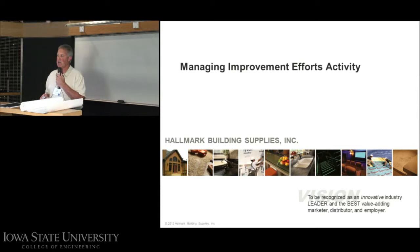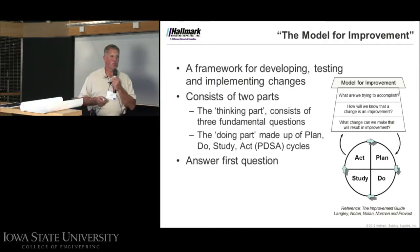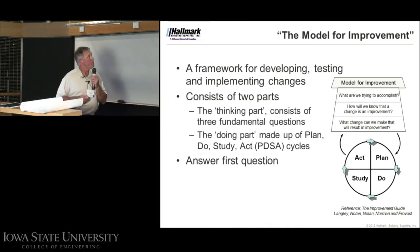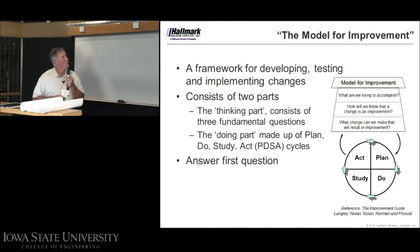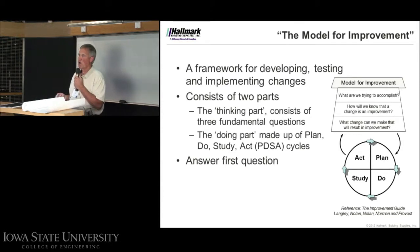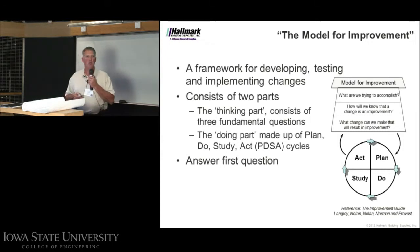The fifth activity is managing improvement efforts. We use a tool created by Associates in Process Improvement called the Model for Improvement. It consists of two components. The first is the thinking part, which has three questions: What are we trying to accomplish? How do we know that a change is an improvement? And what changes could we make that would result in an improvement?